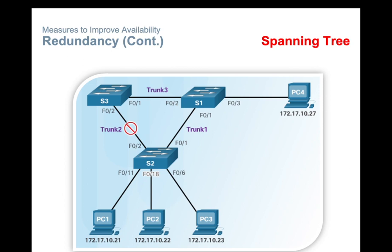The basic function of STP is to prevent loops on a network when switches are interconnected via multiple paths. STP ensures that redundant physical links are loop-free and that there is only one logical path between all destinations on the network. STP intentionally blocks redundant paths that could cause a loop. Blocking these redundant paths is critical to prevent loops, but the physical paths still exist to provide redundancy.